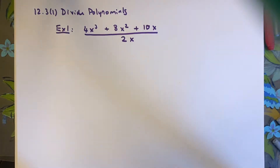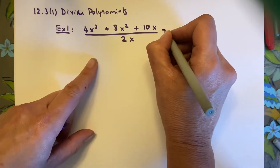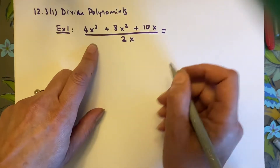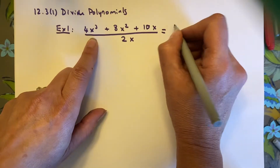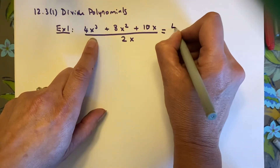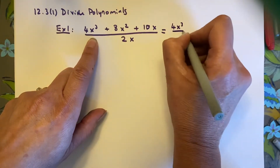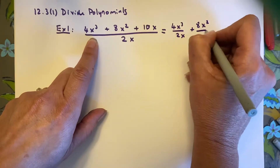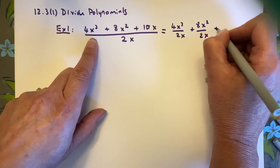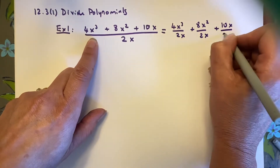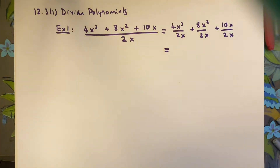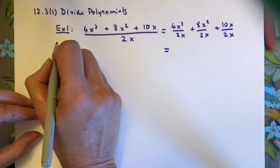You've done stuff like this before — it's the same idea as things you've done in earlier Saxon courses. Method 1: we can separate each term into separate fractions: 4x cubed divided by 2x, plus 8x squared divided by 2x, plus 10x divided by 2x.